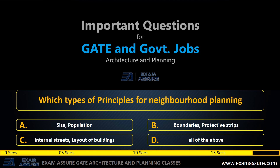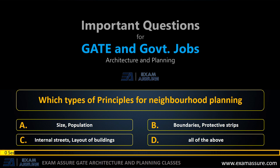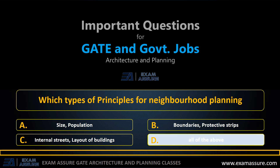Which type of principles are used for neighborhood planning? Option A: Size and population. Option B: Boundaries and protective strips. Option C: Internal diagonal streets and layouts of buildings. Option D: All of the above. The correct answer is: All of the above.